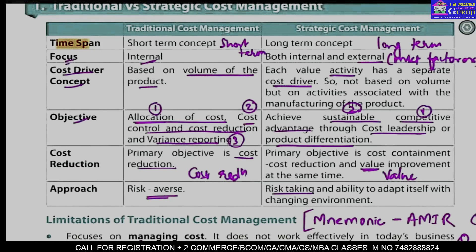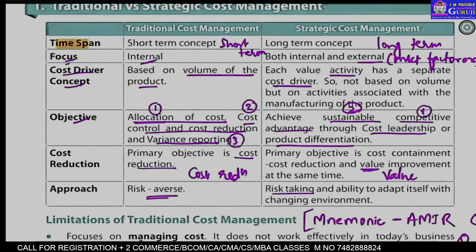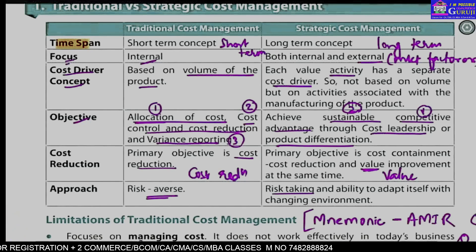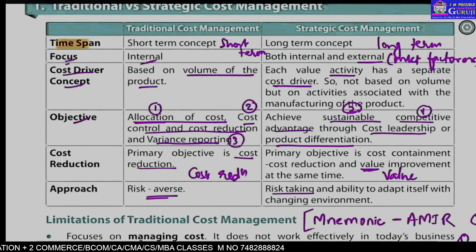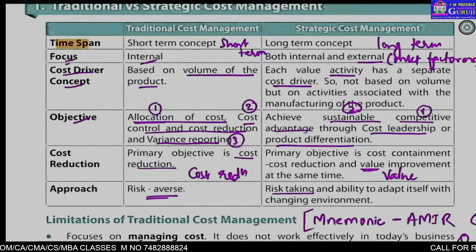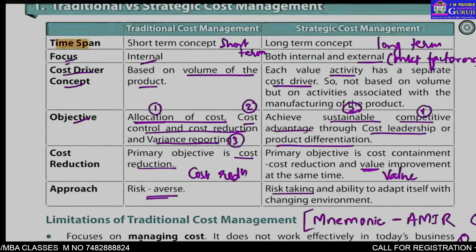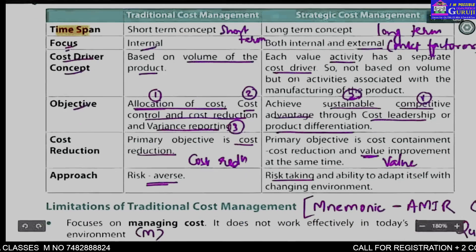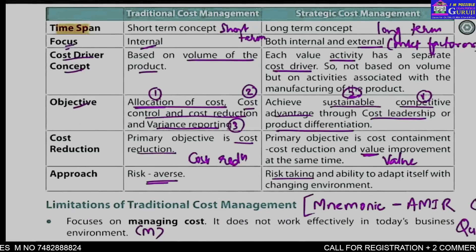To recap: traditional is short-term and strategic is long-term. The focus in traditional is internal, while in strategic it is both internal and external. The cost driver in traditional is volume-based, while in strategic there are different activity-wise cost drivers. The objectives in traditional are three: cost allocation, cost control and cost reduction, and variance reporting. In strategic, the two main objectives are to create and then sustain competitive advantage through cost leadership and product differentiation. The primary objective in traditional is cost reduction, and in strategic it is value improvement. The approach in traditional is risk averse, while in strategic it is risk taking.